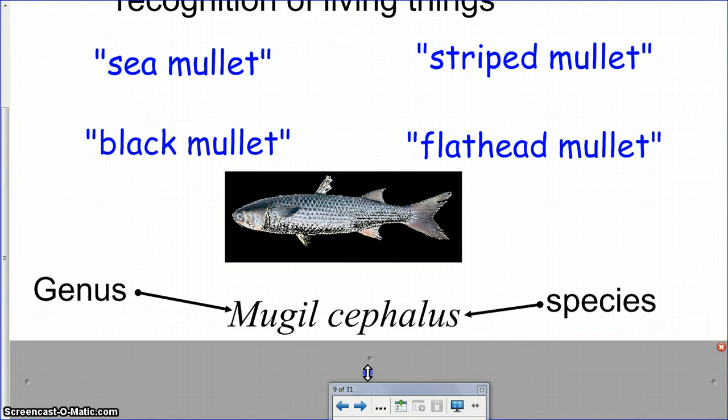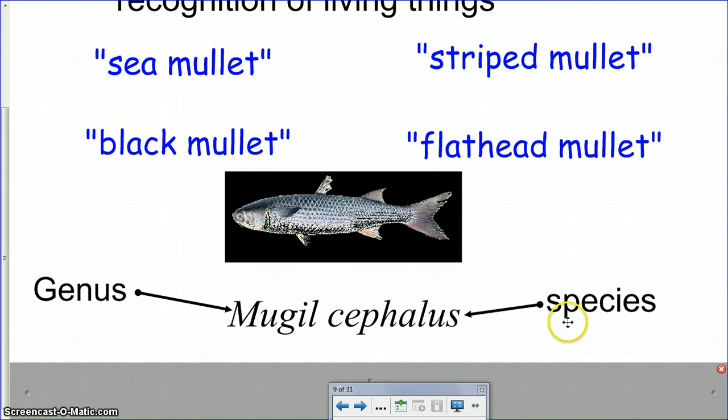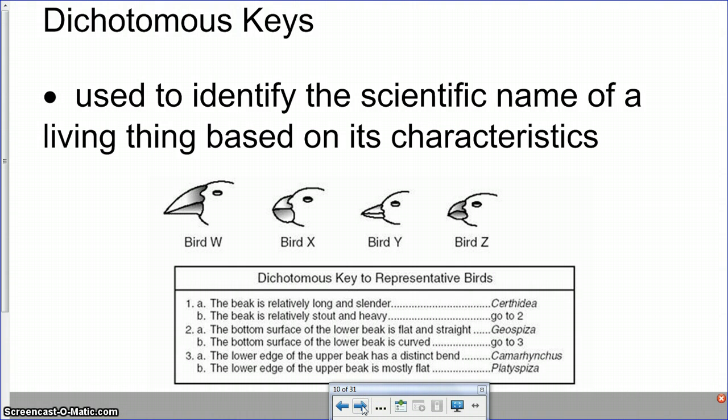So these are four names that are given to this one fish when its actual scientific name is really mugil cephalus. The scientific name is right here, the genus is mugil, the species is cephalus. So there's only one mugil cephalus in the world and it's this fish. The genus name has an uppercase letter and the species name always has a lowercase letter.